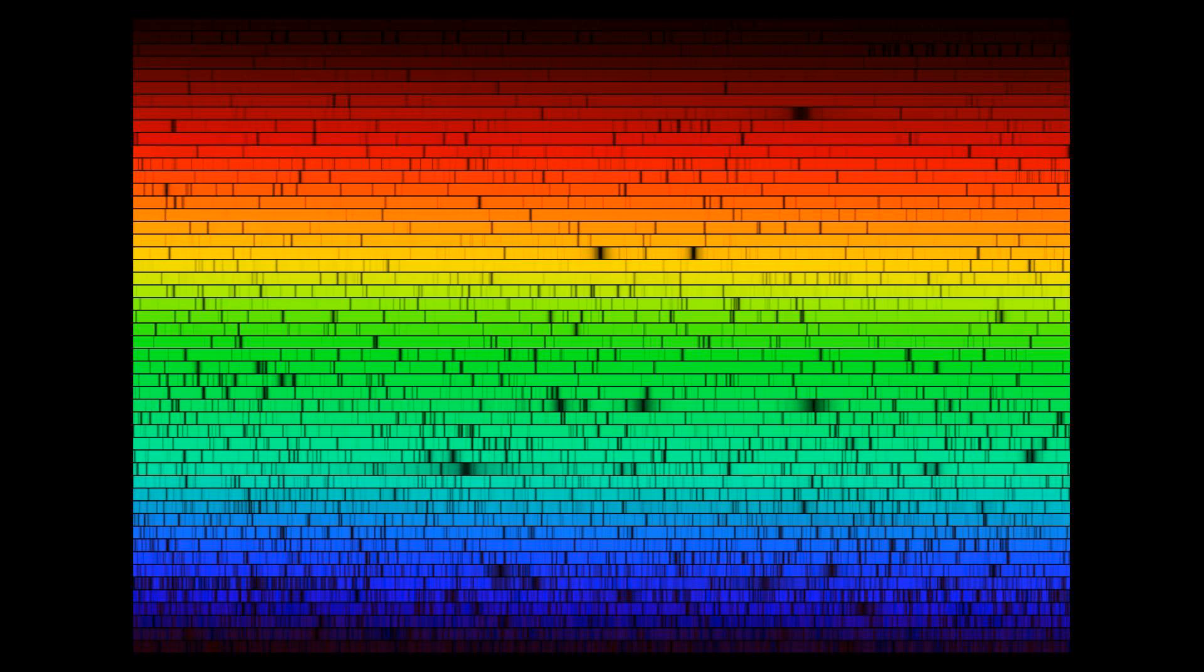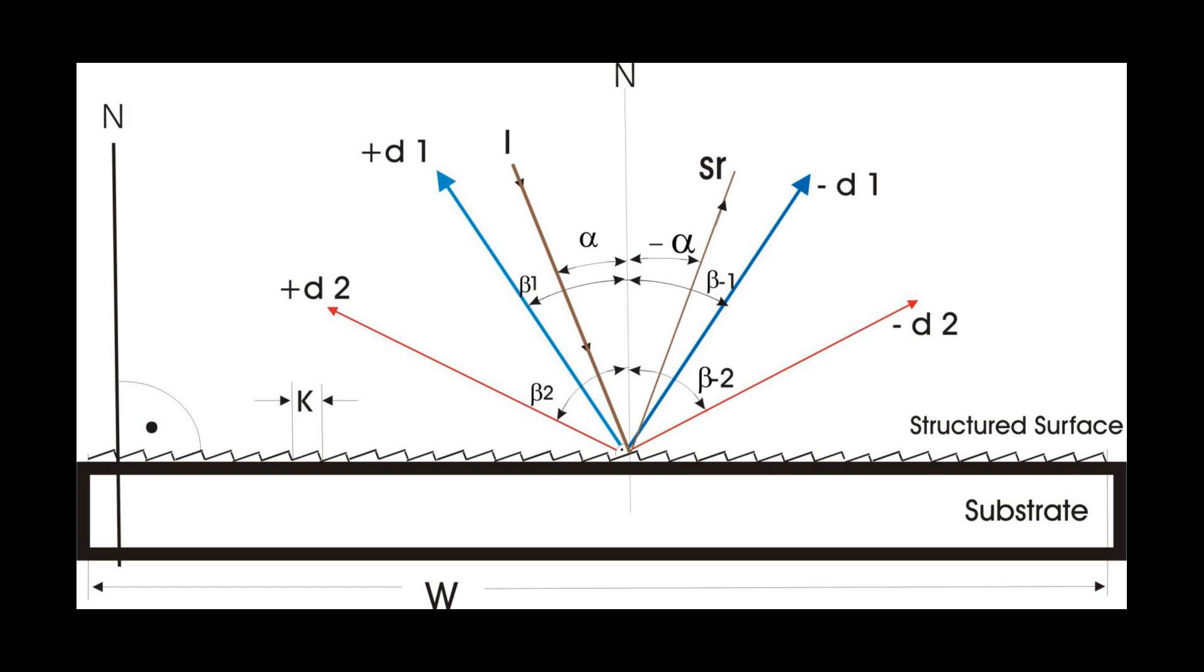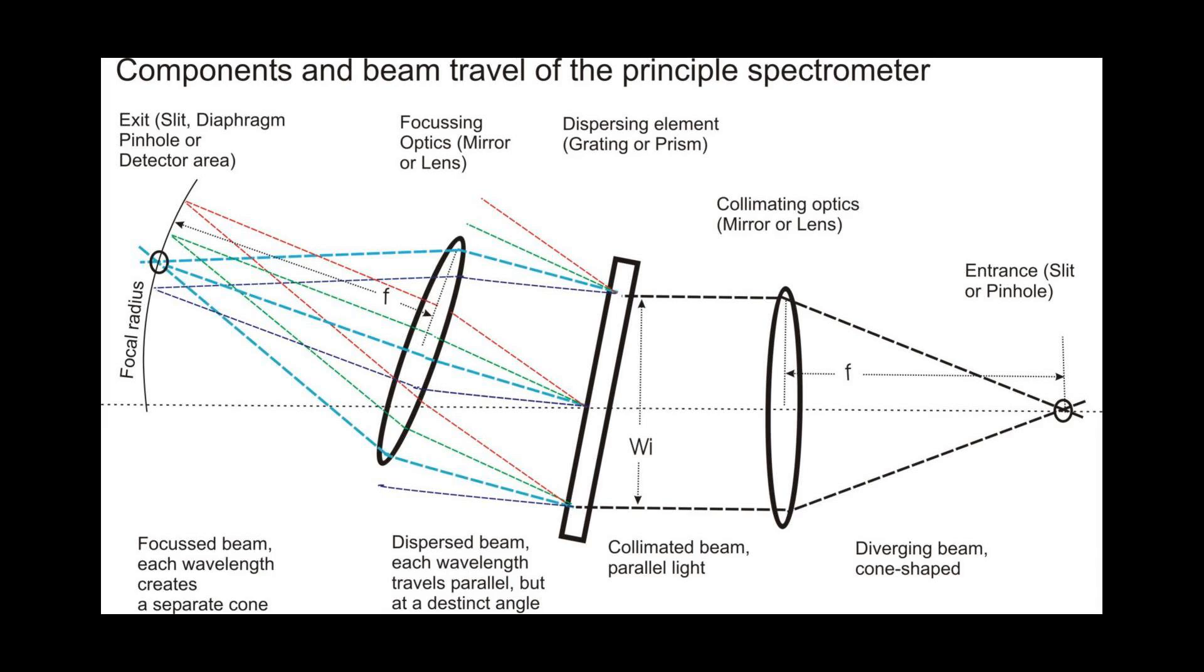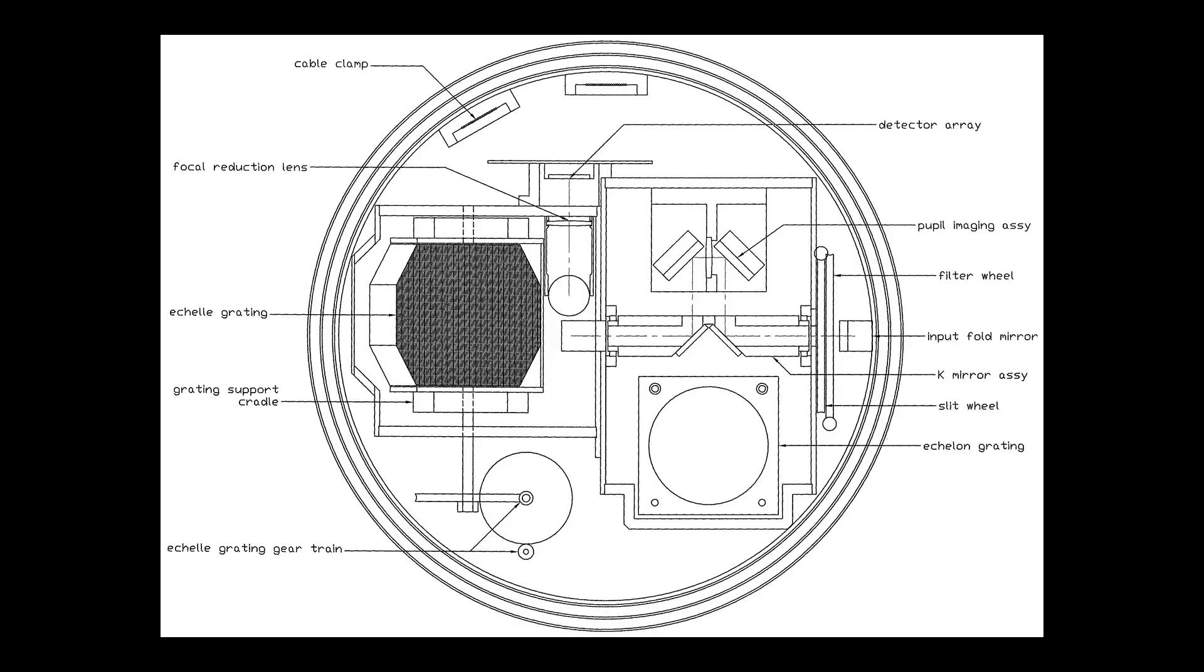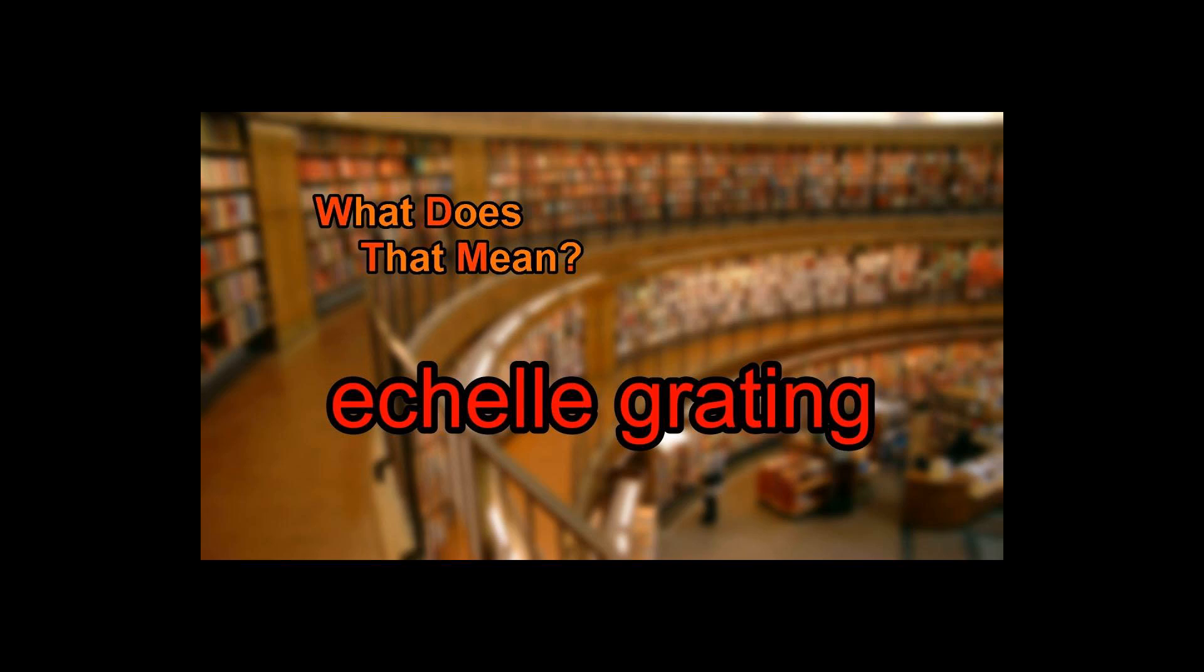Echelle gratings are, like other types of diffraction gratings, used in spectrometers and similar instruments. They are most useful in cross-dispersed high-resolution spectrographs, such as HARPS, PARAS (PRL Advanced Radial Velocity Abu Sky Search), and numerous other astronomical instruments.